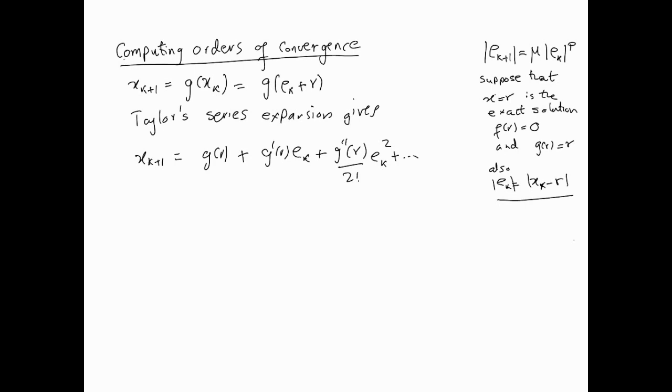If you notice here, remember that the fixed point problem here, g(r) equals r, we can rewrite this as x_{k+1} minus g(r), which is r. So that's equal to g'(r)e_k plus g''(r) over 2! e_k squared plus dot dot dot. And this, if you notice, is in fact e_{k+1}. So e_{k+1} then turns out to be equal to g'(r)e_k plus g''(r) over 2! e_k squared plus, and so on.